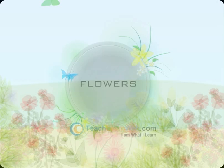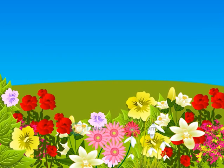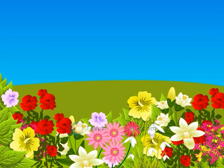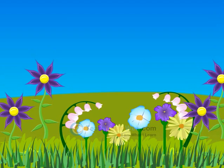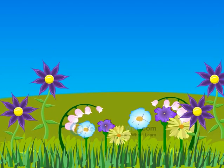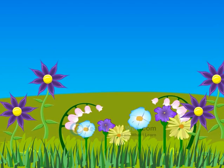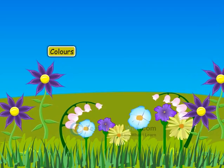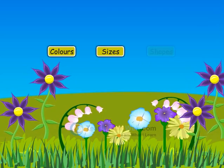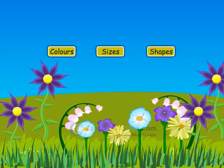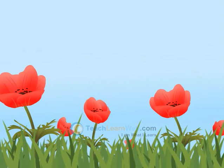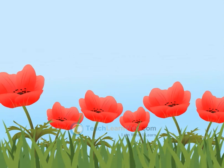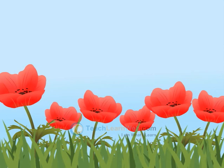Flowers are the beautiful structures of plants. They are colourful and bright, peeping their heads from all over the plant. They are of different colours, sizes and shapes. Most of the flowers are seasonal, that is, they bloom only for a few weeks in a year.